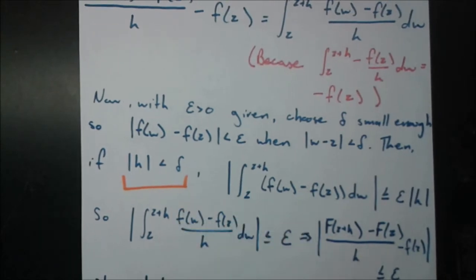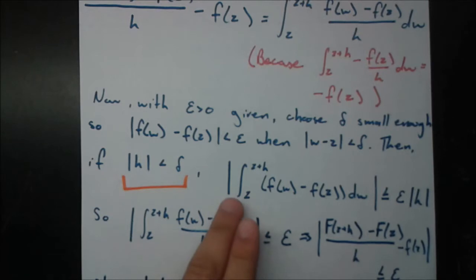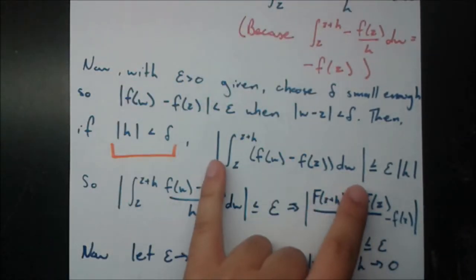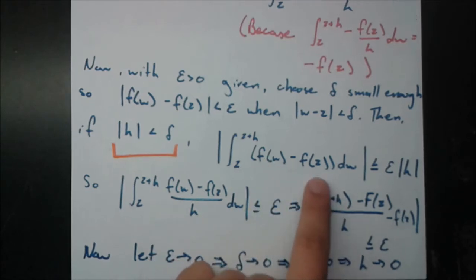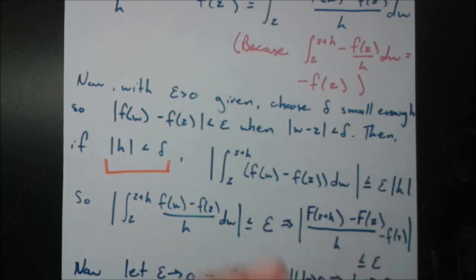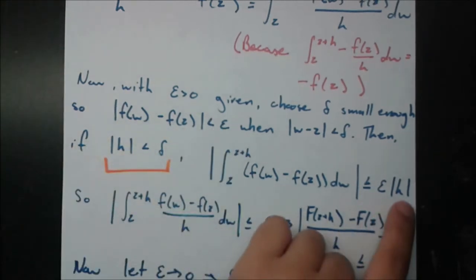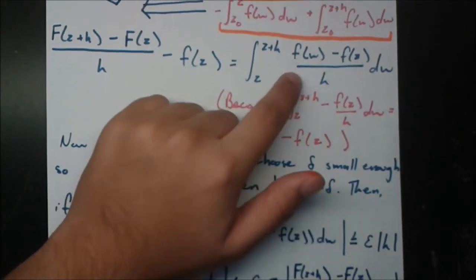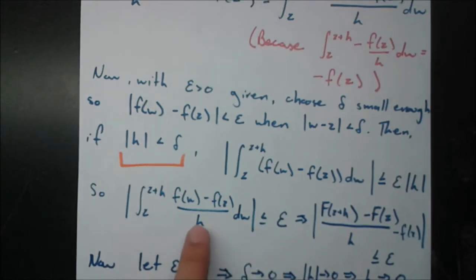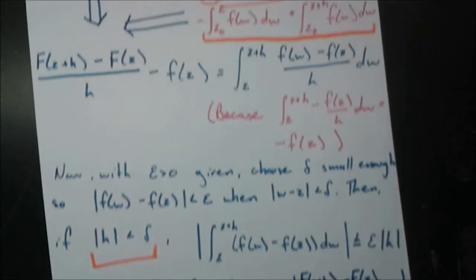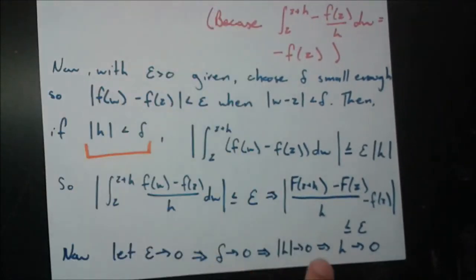We use the integral estimation formula. The modulus of the integral from z to z+h of f(w)/h dw is estimated by: 1/|h| times epsilon (the maximum of |f(w) - f(z)|) times |h| (the length of the curve from z to z+h). The |h| in the numerator and denominator cancel, leaving us less than or equal to epsilon. So the modulus of that whole expression is less than or equal to epsilon.